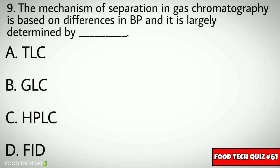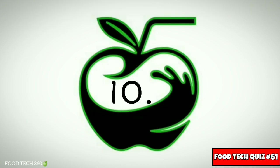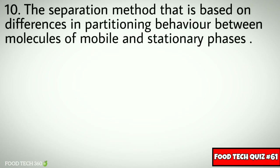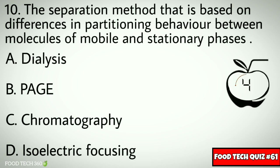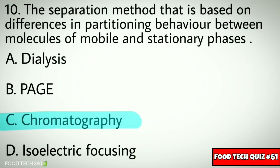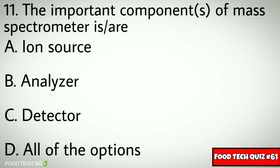Correct answer: d) FID. Question number ten: the separation method that is based on differences in partition behavior between molecules of mobile and stationary phases. Options: a) dialysis, b) PAGE, c) chromatography, d) isoelectric focusing. Correct answer: c) chromatography. Question number eleven: the important components of a mass spectrometer are — options: a) ion source, b) analyzer, c) detector, d) all of the options.